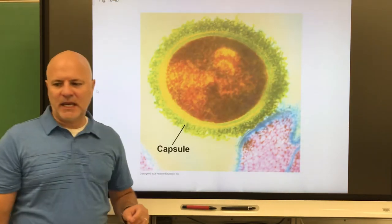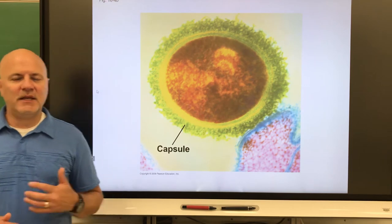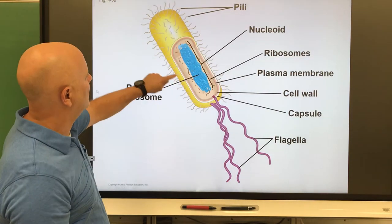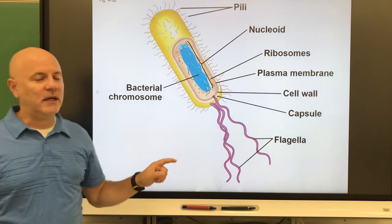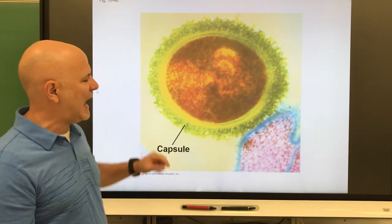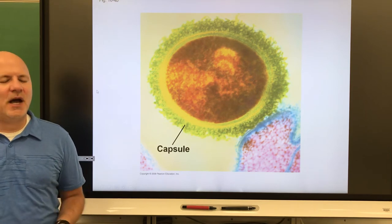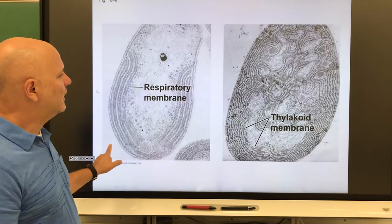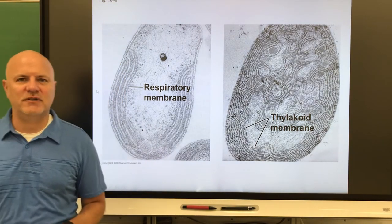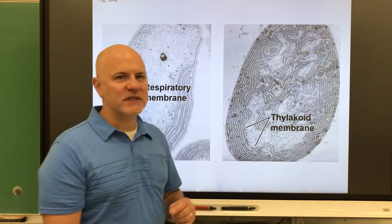Next is a glycocalyx — a sticky outer layer outside of the prokaryotic cell wall. It consists of proteins and/or polysaccharides. In the picture, all the yellow is showing the glycocalyx. A slime layer is a loose glycocalyx, while a capsule is a firm glycocalyx. Functions include attachment, helping resist drying out, and protecting the cell. Lastly, thylakoids are structures that absorb light energy, found in cyanobacteria — photosynthetic bacteria.